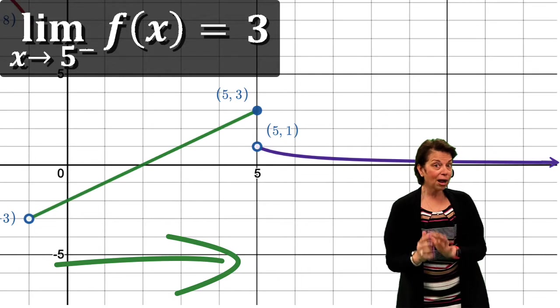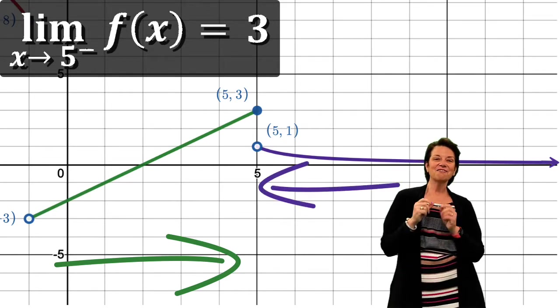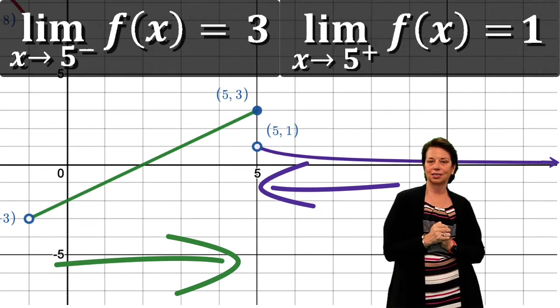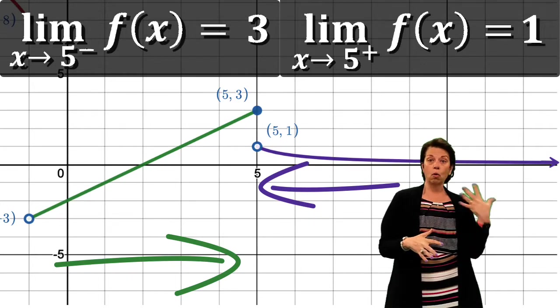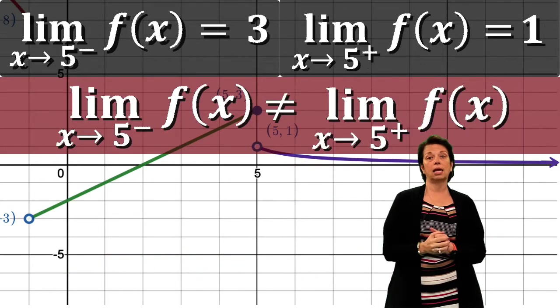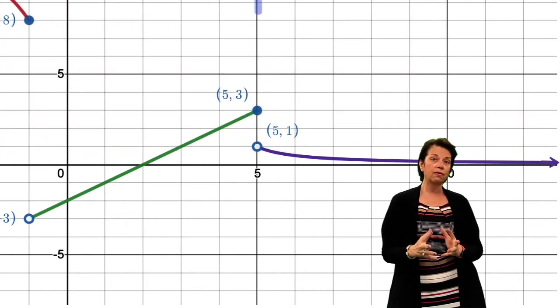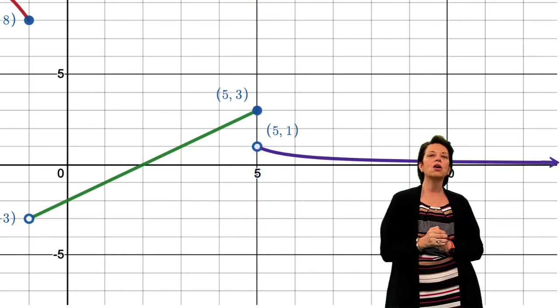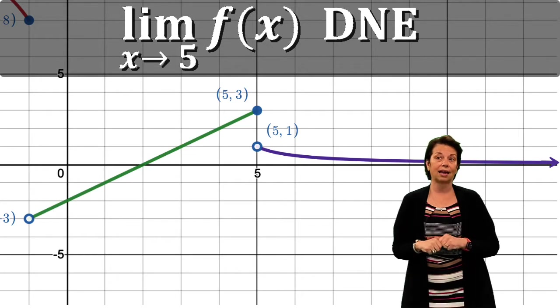Unfortunately, on the right side, as x approaches 5 from the right-hand side, we see that the function value, the limit itself, is approaching positive 1. Yet again, we have the situation where one side limit is not equal to the other side limit. So as we approach just 5 in general, not indicating necessarily left or right, as we're just approaching 5, we would say the limit does not exist. DNE once again.